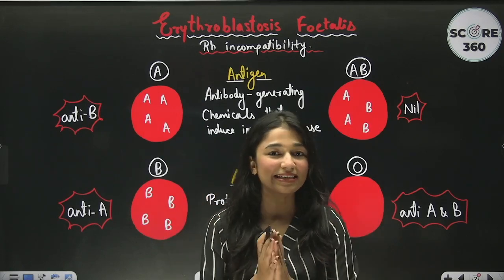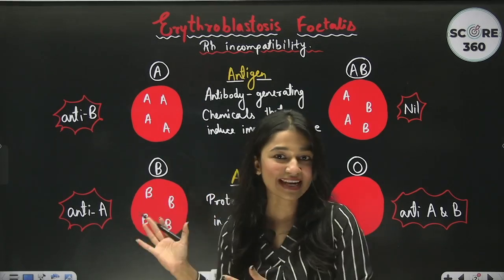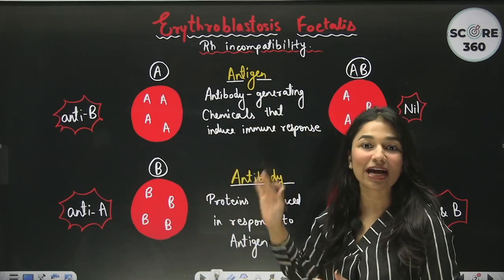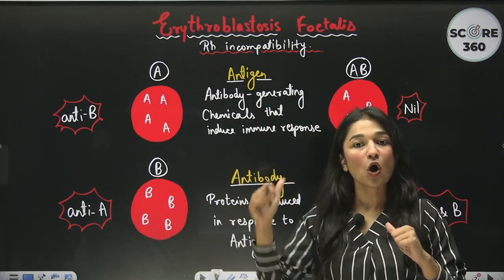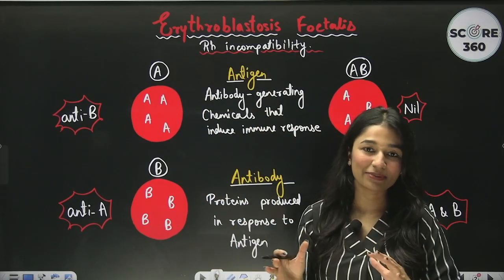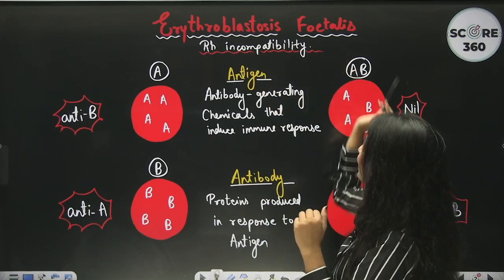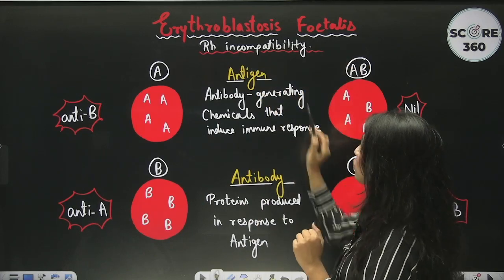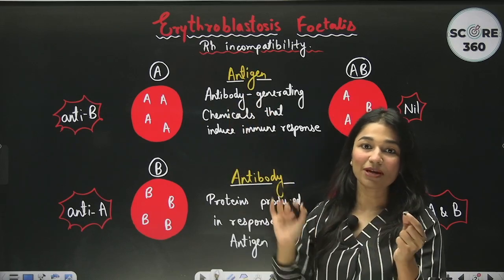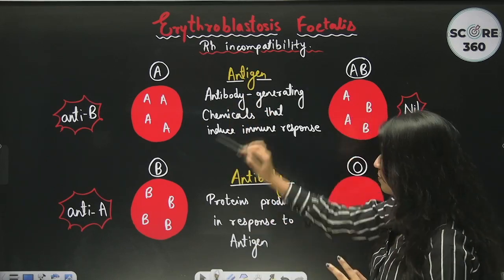So erythroblastosis fetalis — I will briefly cover ABO blood grouping and then we will talk about RH compatibility and incompatibility. The case of erythroblastosis fetalis is a case of RH incompatibility. In 2 minutes I will brief you about ABO blood grouping.